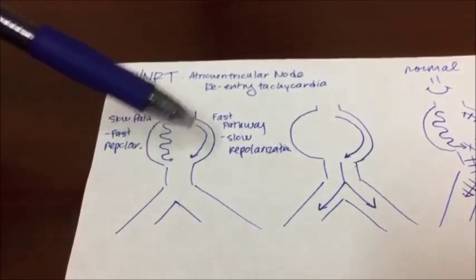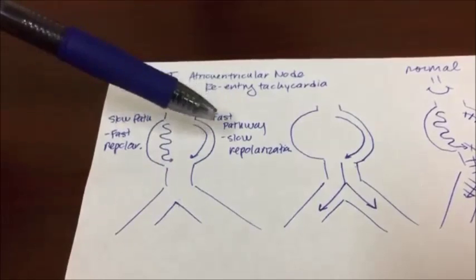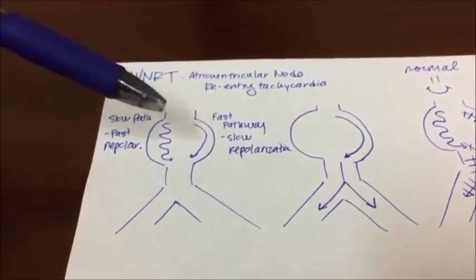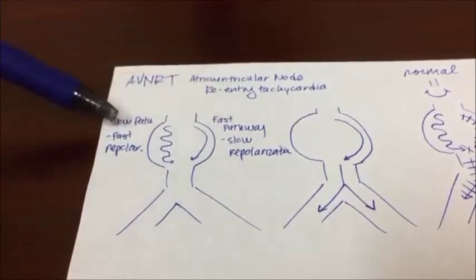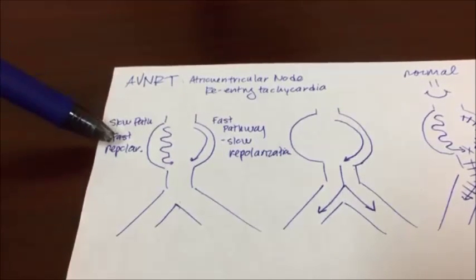So here's an AV node, poor representation of one. It's important to know that the AV node has two pathways. It has a fast pathway with a slow repolarization time and a slow pathway with a fast repolarization time.